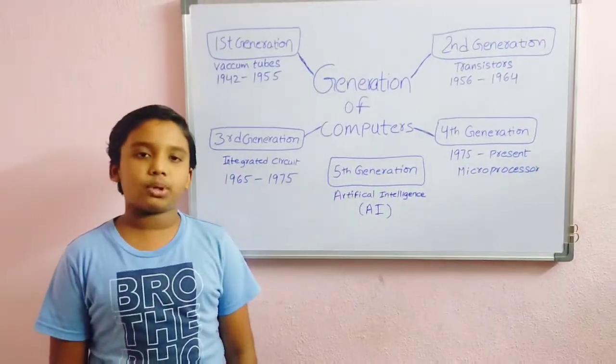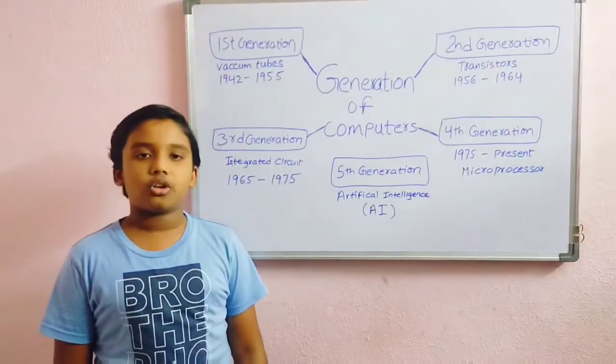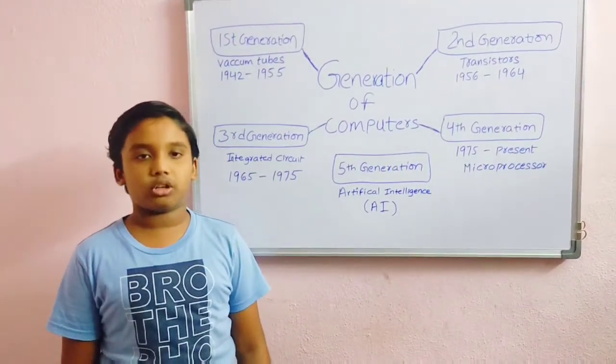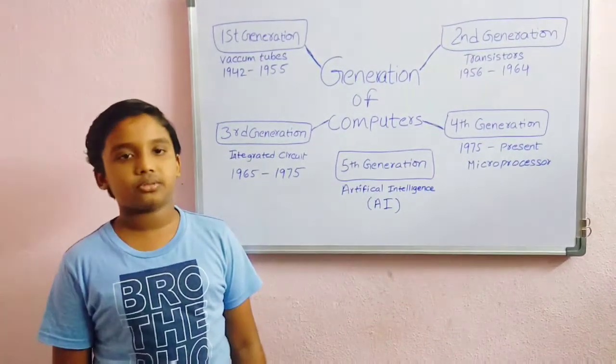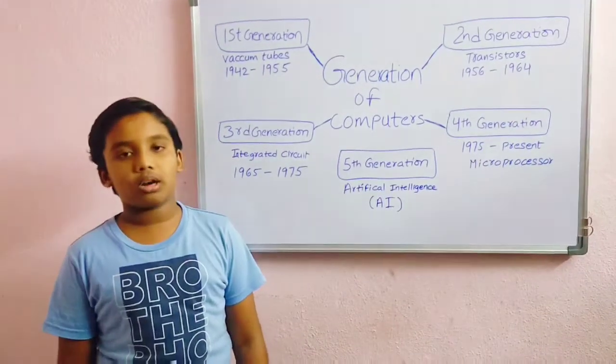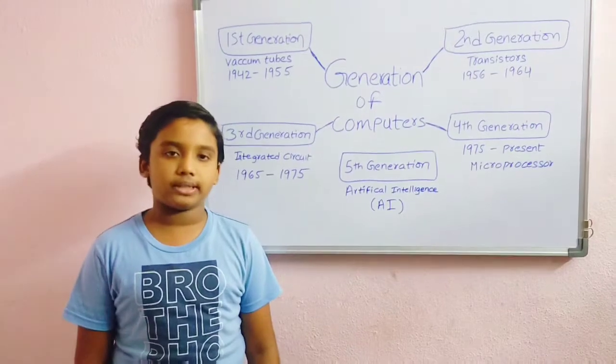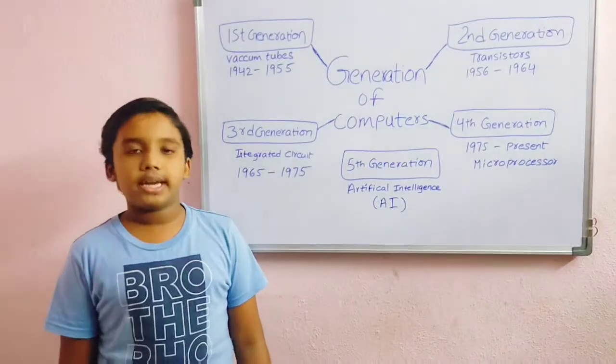The fourth generation computers use microprocessors. A microprocessor consists of a small silicon chip where thousands of circuits are placed. The fourth generation computers are portable, smaller, faster, and cheaper. They use less electricity and produce less heat.